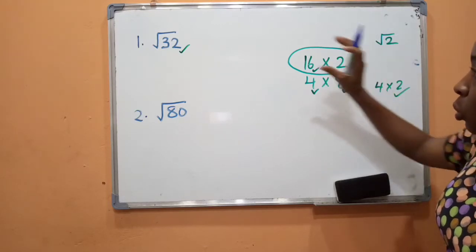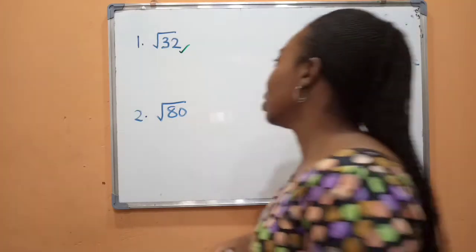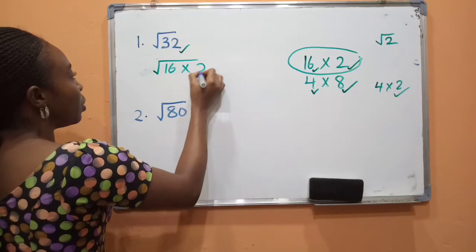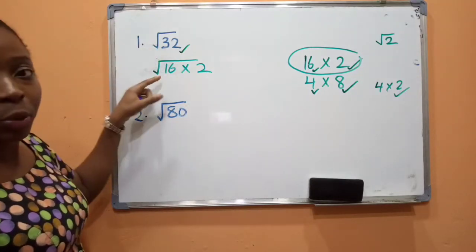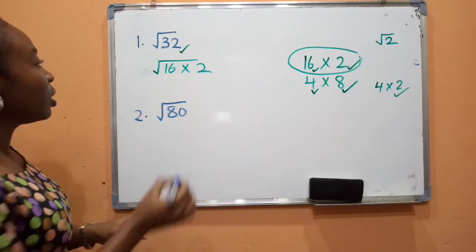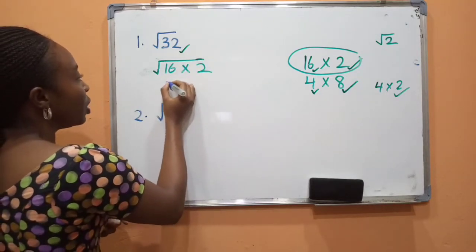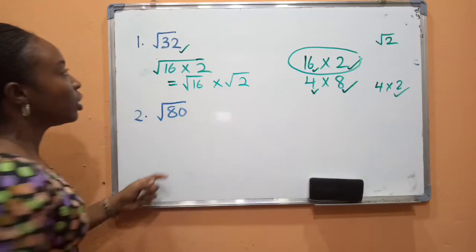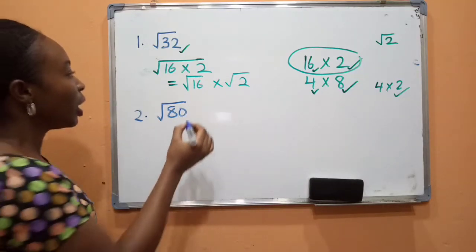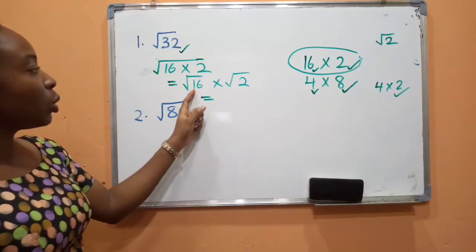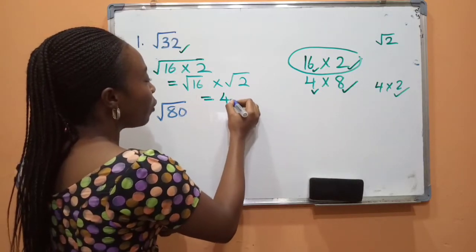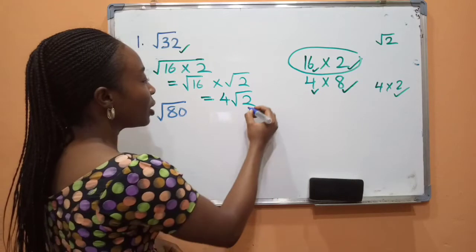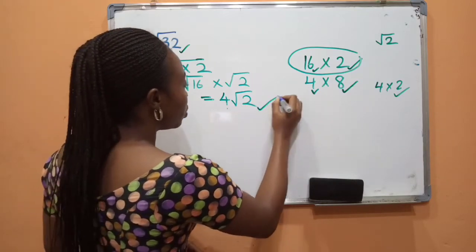So these are the factors we need to change this to a mixed salt. We're going to have the root of 16 times 2. When you say 16 times 2, you get 32. Then the next thing we are going to do: root of 16 times 2 equals root 16 times root 2. What's the square root of 16? It is 4, and then we have root 2. We cannot further simplify 2, so we stop here. Our answer becomes 4 root 2.